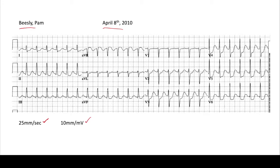The first thing we look at is rate, rhythm, axis. Starting off with rate, just by quickly looking at this, we see that this is a pretty fast rate. So the best thing to use with a fast rate is the box method, not necessarily counting. Looking at lead one, the QRS complexes are pretty close to the big boxes at the beginning. So we count big boxes: one, two — there's two big boxes between the QRS complexes. So this would be 300 over two, or 150 beats per minute.